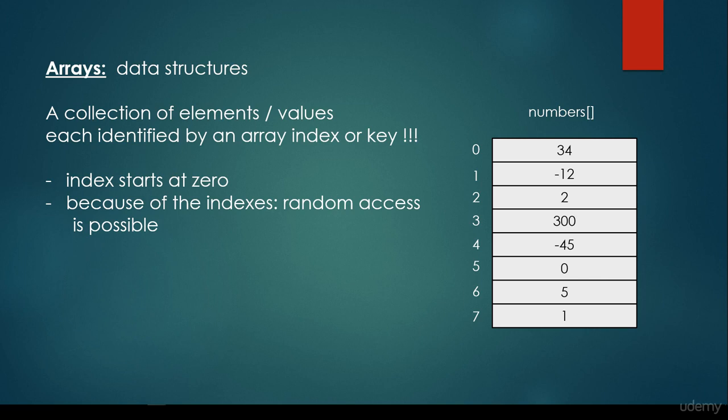So we have values, and these values are identified by an index or a key. Indices start at zero for most programming languages such as Python, Java or C++. And because of the indices, random access is possible.